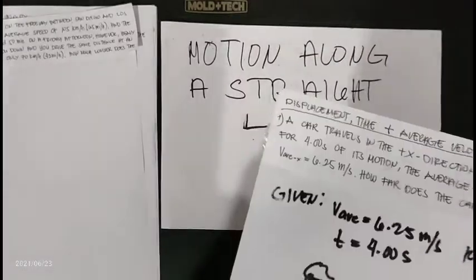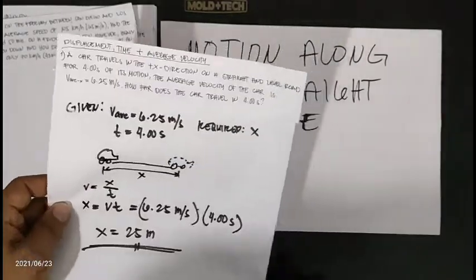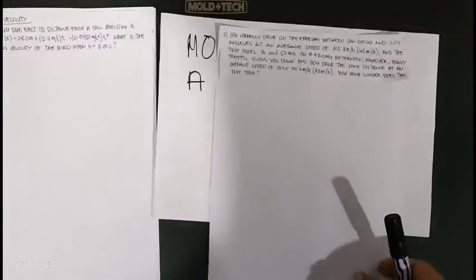Let us proceed to the second example of displacement, time, and average velocity. You normally drive the freeway between San Diego and Los Angeles at an average speed of 105 kilometers per hour or 65 miles per hour. On a Friday afternoon, heavy traffic slows you down and you drive the same distance at an average speed of only 70 kilometers per hour or 43 miles per hour. How much longer does that trip take?